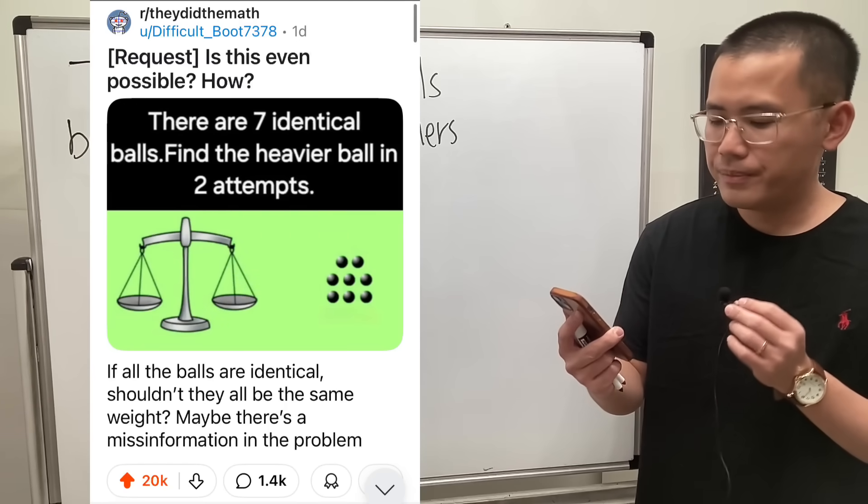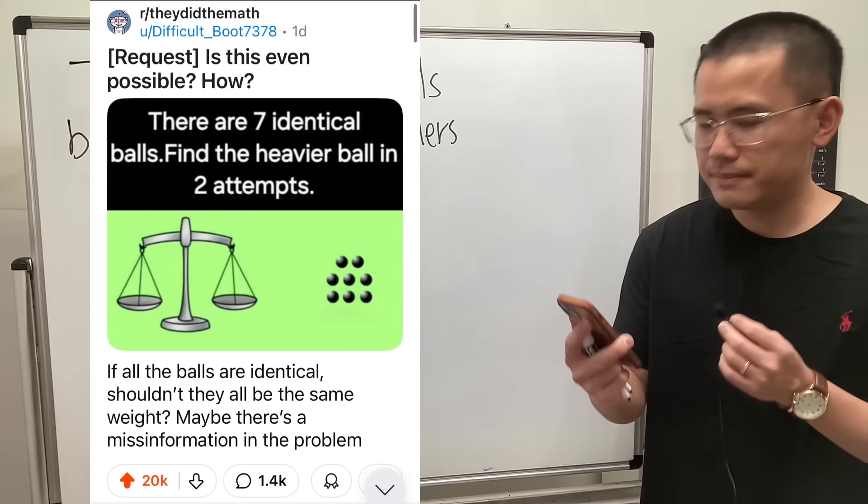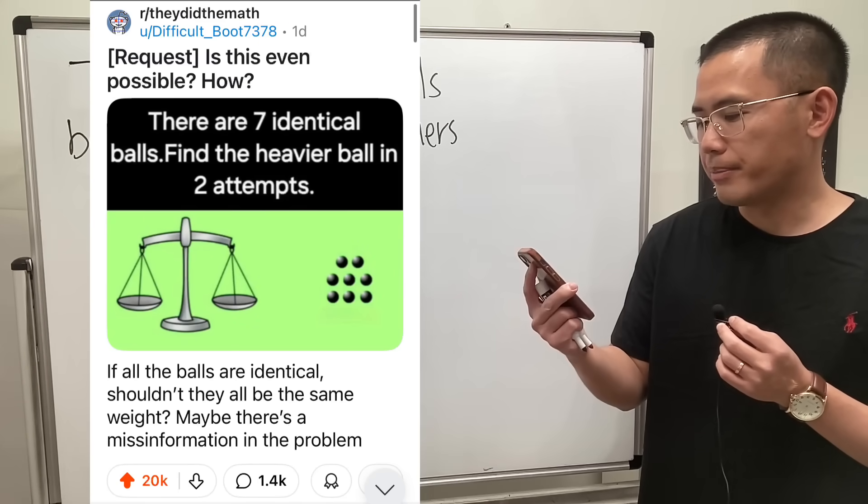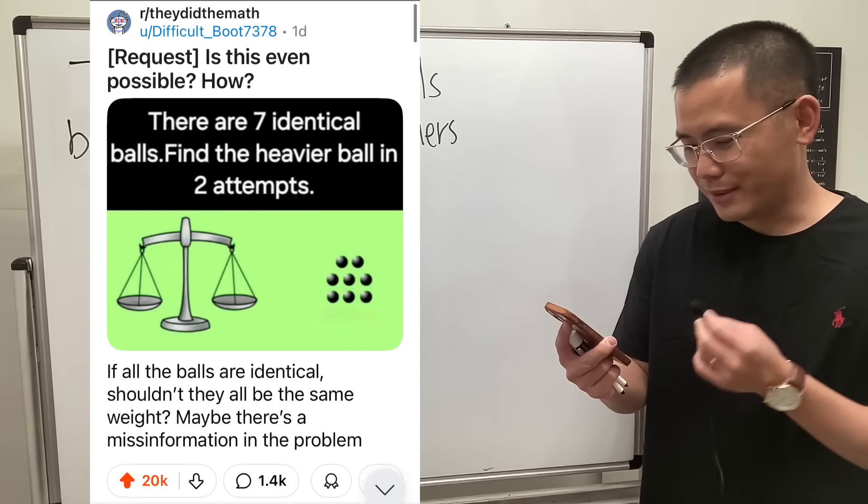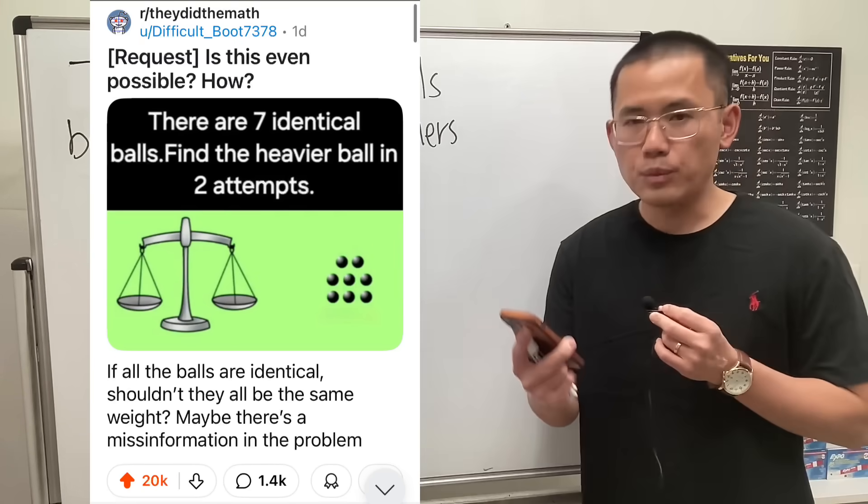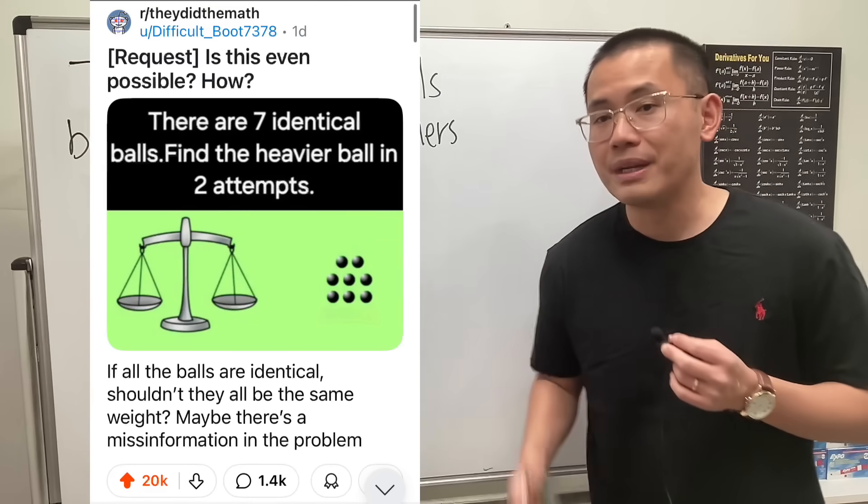Is this even possible? There are seven identical balls, find the heavier ball in two attempts. Okay, I know the caption says seven but the picture shows eight, and it also says if all the balls are identical, shouldn't they all be the same weight? Maybe there's misinformation in the problem.